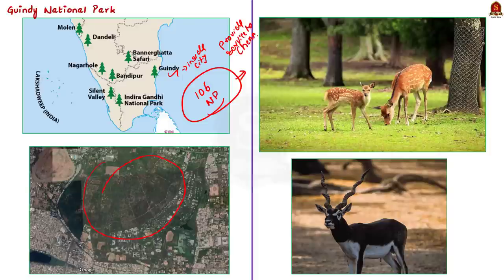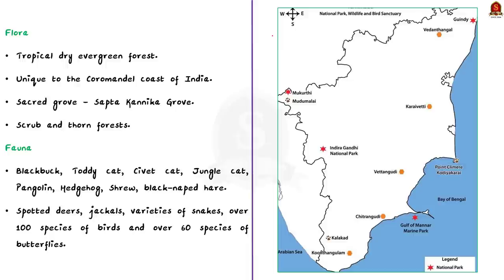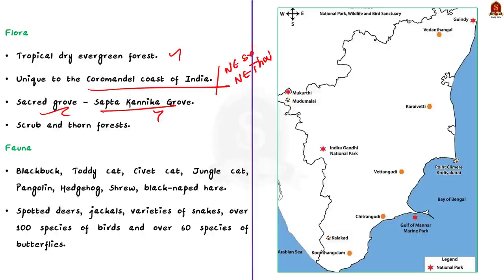Guindy National Park is one of the smallest national parks in India. The type of forest found here is tropical dry evergreen forest, which is unique to the Coromandel Coast of India, northeastern Sri Lanka and northeastern Thailand. Inside the national park, there is also a sacred grove called the Sapthakannika grove — one of the few remaining sacred groves in Chennai. In addition to tropical dry evergreen forest, scrub and thorn forests are also present. It contains more than 30 species of trees and a number of century-old gigantic banyan trees.